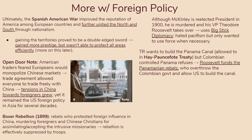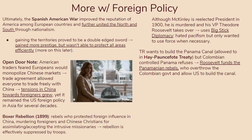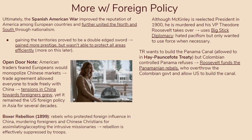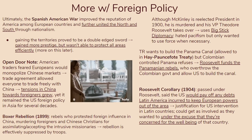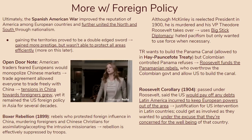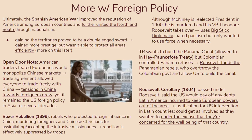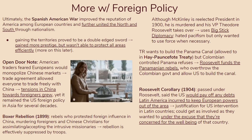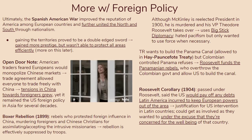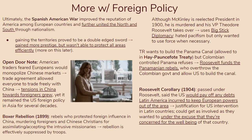Roosevelt also wanted to build the Panama Canal, allowed by the Hay-Pauncefote Treaty. When Colombian-controlled Panama refused, Roosevelt funded Panamanian rebels who overthrew the Colombian government and allowed the US to build the canal. You should also know about the Roosevelt Corollary of 1904, which said the US would pay off any debts Latin America incurred in order to keep European powers out of the area — a justification for US intervention in Latin countries, exactly like the Platt Amendment, letting the US get involved under the excuse of concern for the country's wellbeing.